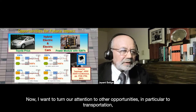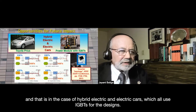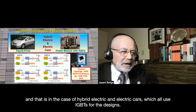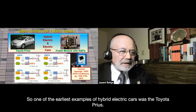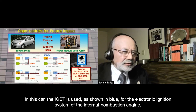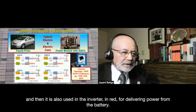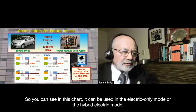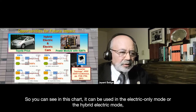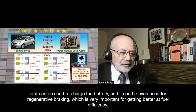Turning to transportation opportunities: hybrid electric and electric cars all use IGBTs. One of the earliest hybrid electric cars was the Toyota Prius, which uses the IGBT for the electronic ignition system of the internal combustion engine and also in the inverter for delivering power from the battery — in electric-only mode, hybrid-electric mode, to charge the battery, and for regenerative braking.